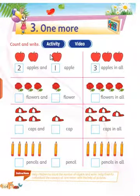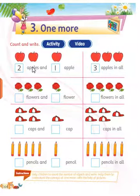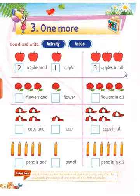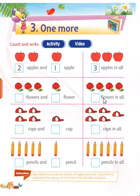See here — what is here? You see two apples and one apple. This is one more we add here, so how much will be here? Three apples in all. Okay, here you see three flowers and one more we add here, so how much will be here? Four flowers.